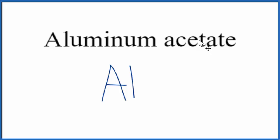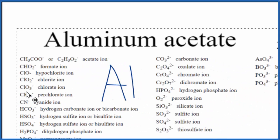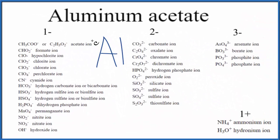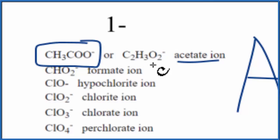We either memorize that it's CH3COO- or we could look it up on a table if we were allowed to do that. So here's a table, and we find the acetate ion right here. So the acetate ion is CH3COO-.